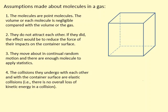The fourth assumption is that the collision between the particles and the wall is elastic. This means if a particle hits the wall with momentum mv, it won't lose any kinetic energy, and it will rebound with momentum -mv, so the change in momentum will be -2mv.